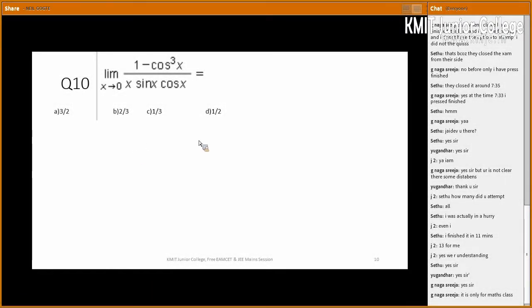In the 10th problem, what he has given is limit x tends to 0, 1 minus cos³x by sinx sinx cosx. What is the answer you are asking?